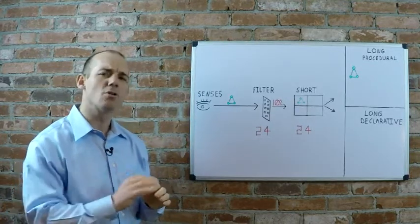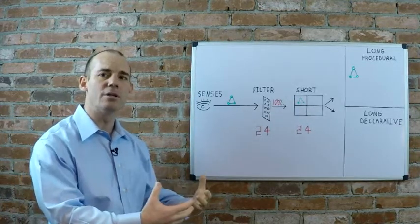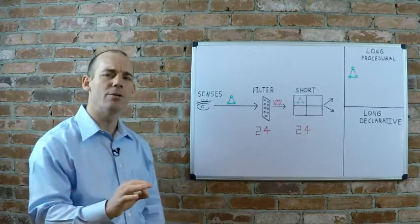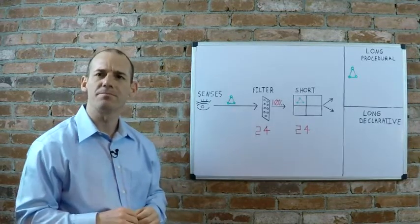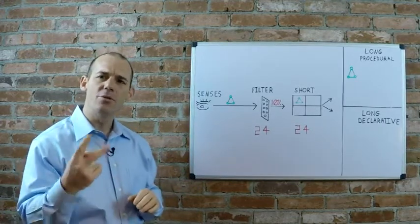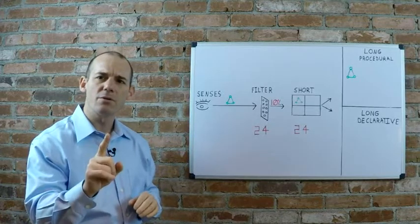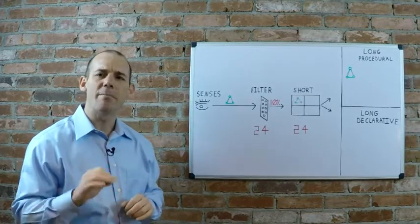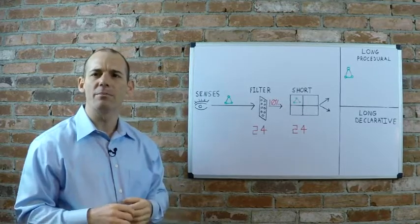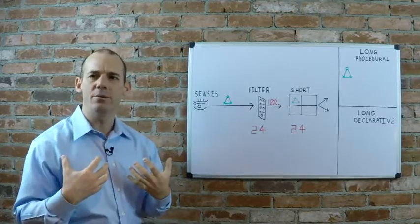If you want you can also prime new information during this teaching session and you'll see later that's what we do in the course that we've developed. So when we're teaching the information there are two things we want to do. First we want to take advantage of the power of observational learning by demonstrating what we want them to do and then having them imitate what we do.